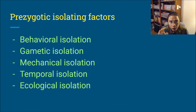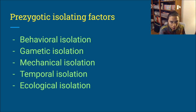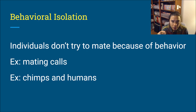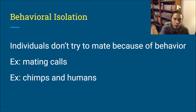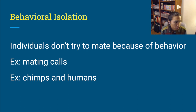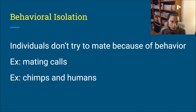You don't need to know each pre-zygotic factor in particular, but on the exam you'll likely be asked whether a given scenario is pre-zygotic or post-zygotic. Behavioral isolation: individuals don't try to mate because of behavior. A lot of birds look very similar, but they will only respond to and mate with another bird with the corresponding call. So while they may look similar and maybe be physically able to mate, they don't because of that behavioral adaptation. Another example would be chimps and humans — generally they don't try to mate with each other because of behavior.